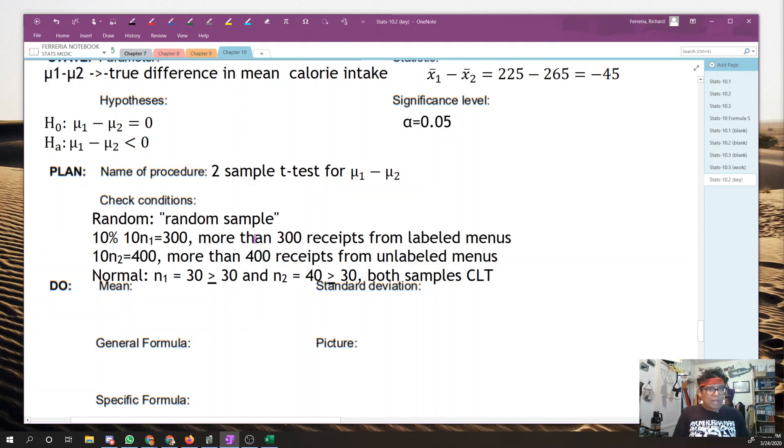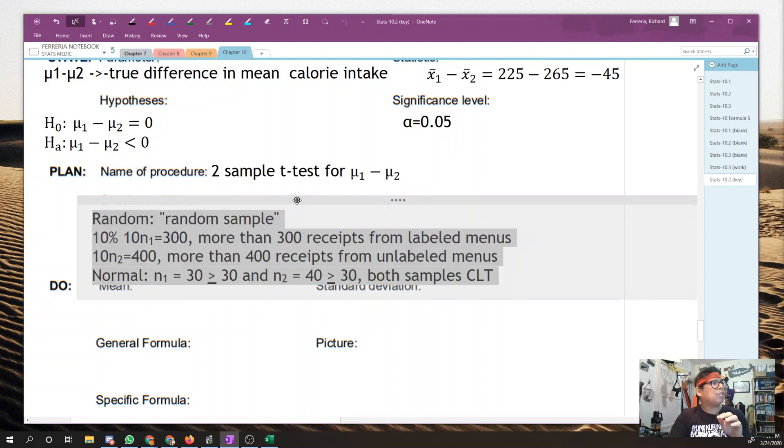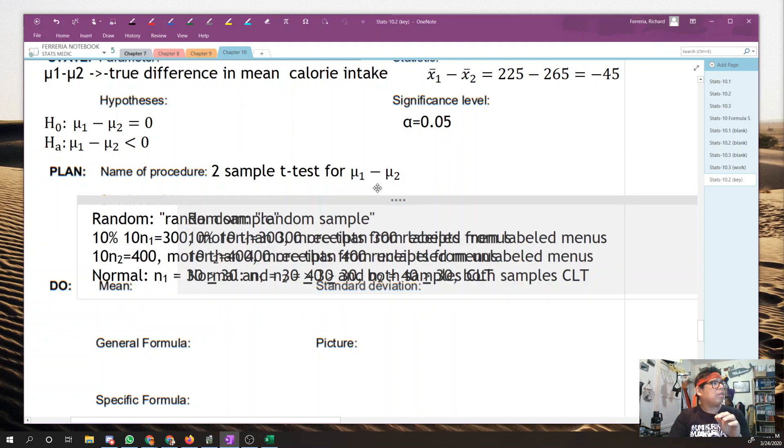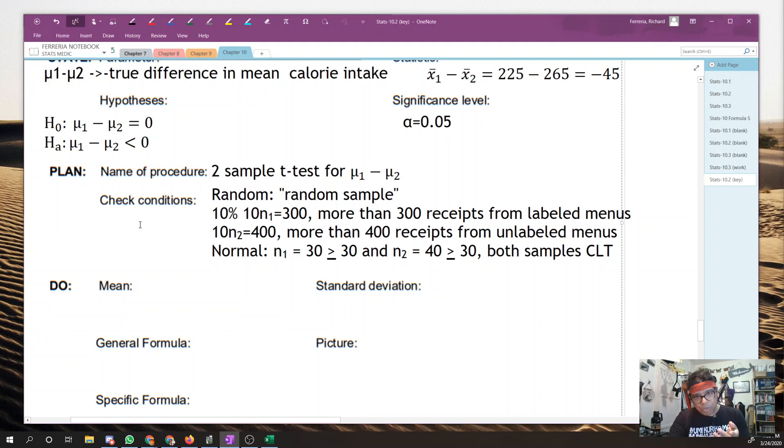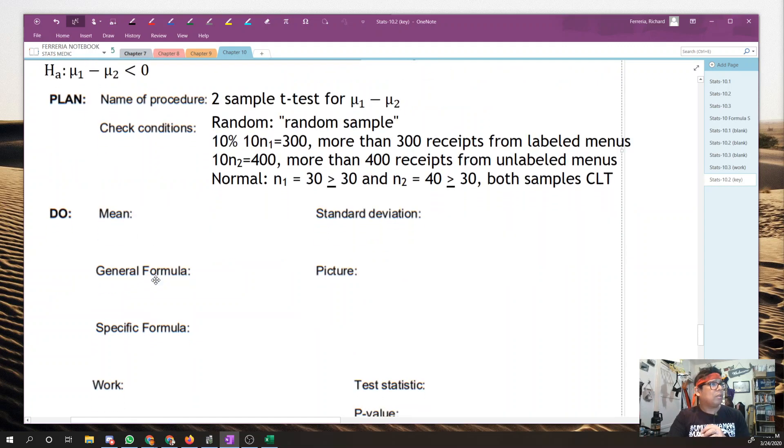10% condition. 10 times n1 is 300, 10 times n2 is 400. So that means we need to have more than 300 and 400 receipts from labeled and unlabeled restaurants, respectively. That's not too much of a stretch of the imagination. Finally, and this is the exciting one, is both samples are greater than or equal to 30. So both samples qualify for the central limit theorem. And just for review, remember that the central limit theorem says that if a sample size is large enough, which we interpret to mean greater than 30, that means that the sampling distribution will be approximately normal.